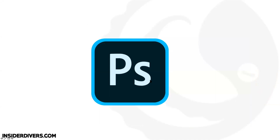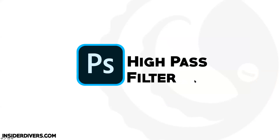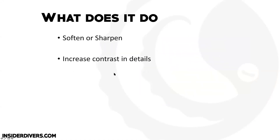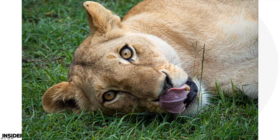The next filter is a much larger topic: the High Pass filter. This is a very heavily used feature in professional photography. It softens or sharpens details and increases contrast of fine details — essentially doing what Texture and Clarity do in Lightroom but in a more refined way.